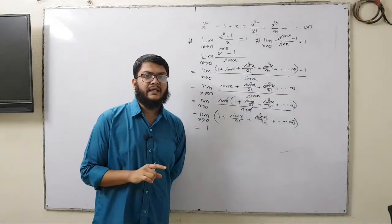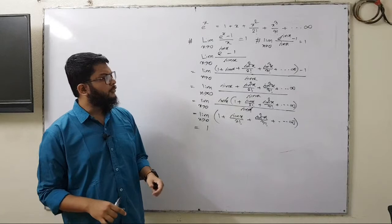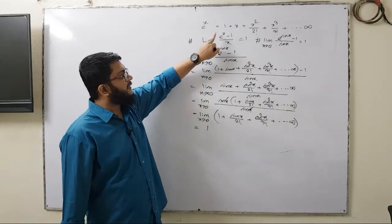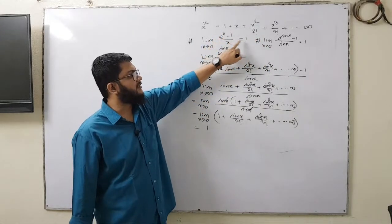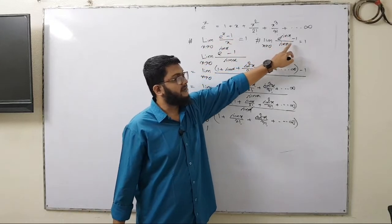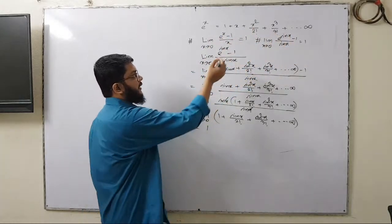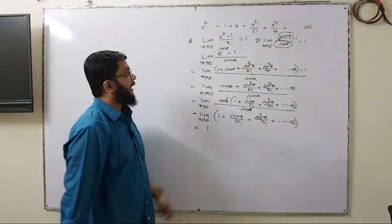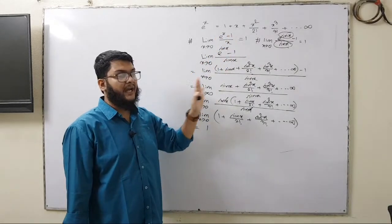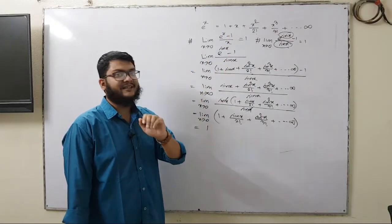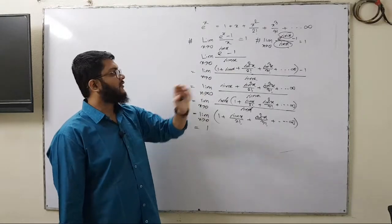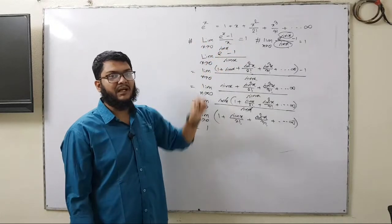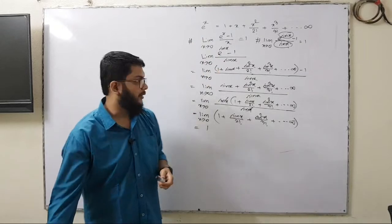Now notice the similarity between these two problems. In the first problem, e to the power x minus 1 divided by x equals 1. Here, e to the power sin x minus 1 divided by sin x also equals 1. The sin x is the power of e, just as x was the power of e earlier. So for all similar structures — except for cases like cos x which would create a problem — you will get the result as 1.